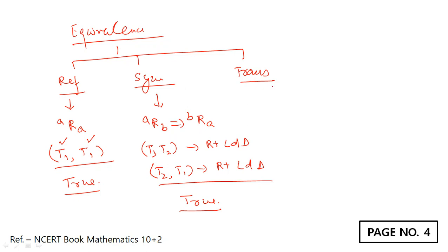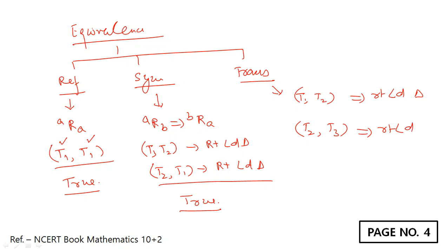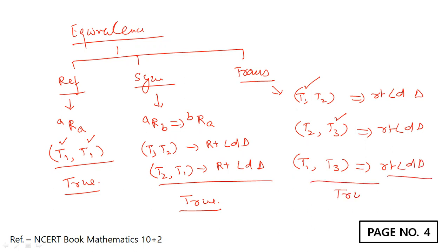What about the third condition — transitive? T1 and T2 are both right-angled triangles. T2 and T3 are also right-angled triangles. This means the combination of T1 and T3 is also a right-angled triangle. This condition is also true. Since all three conditions hold, the relation is known as an equivalence relation.